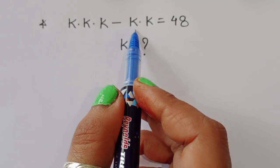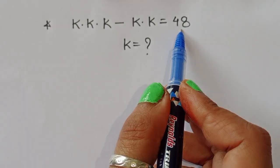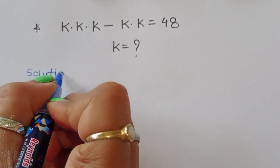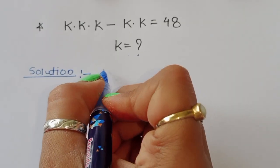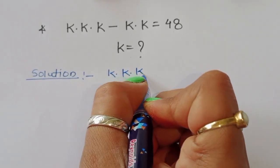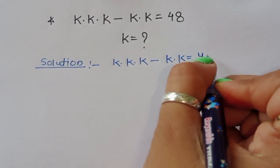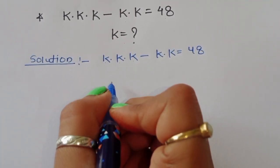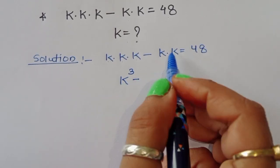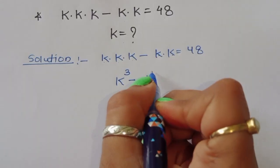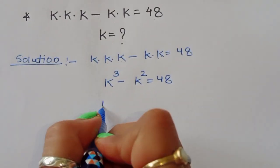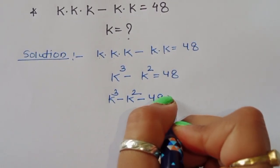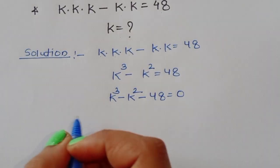Given k times k times k minus k times k is equal to 48, we have to find out the value of k. k times k times k is k cubed, and k times k is k squared, so we can write k cubed minus k squared is equal to 48, which becomes k cubed minus k squared minus 48 equals 0.